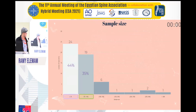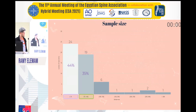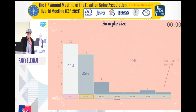Regarding sample size, most publications had a sample size of fewer than 50 patients. Only 35 had between 50 and 100, and fewer than 11 publications had a sample size greater than 100. These were the authors with the largest sample size documents.